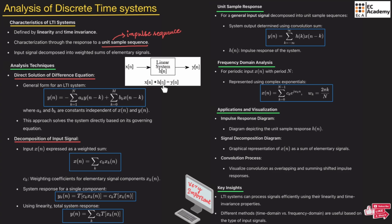Since it is a discrete time system, the type of convolution is known as convolution sum. For an analog signal we take the convolution integral, whereas for a discrete time system we take the convolution sum. Therefore, the output equals H(N) convoluted with X(N), where X(N) is the input sequence and H(N) is the impulse response when the input is the impulse function.